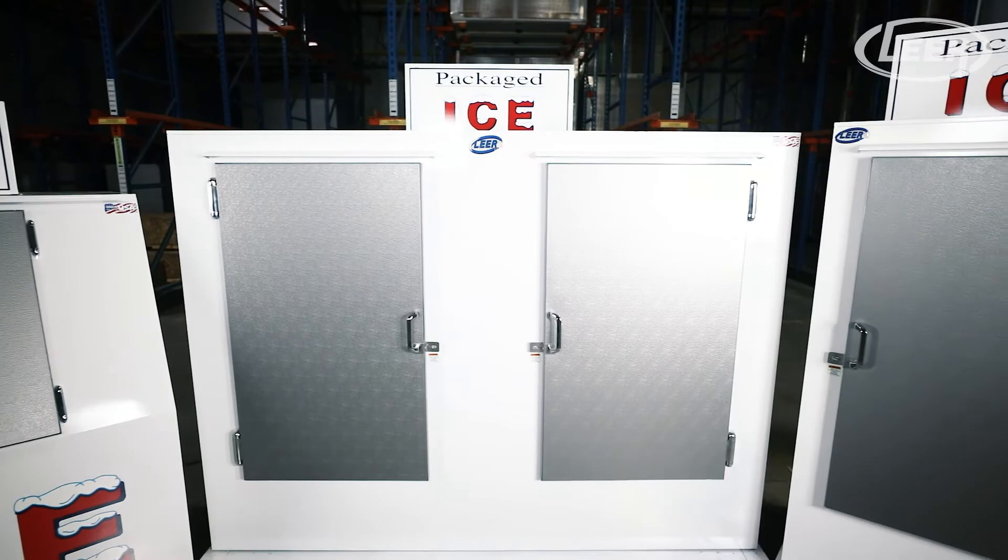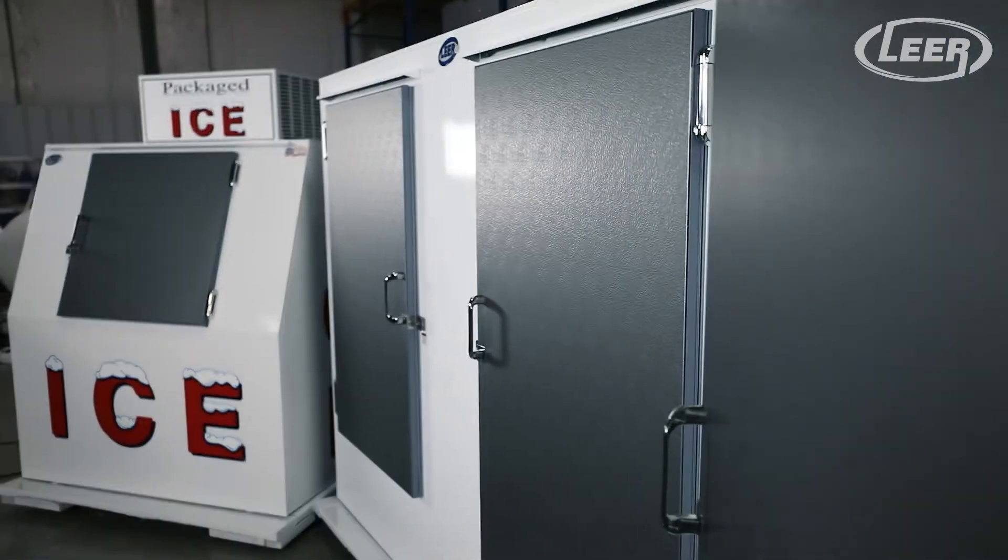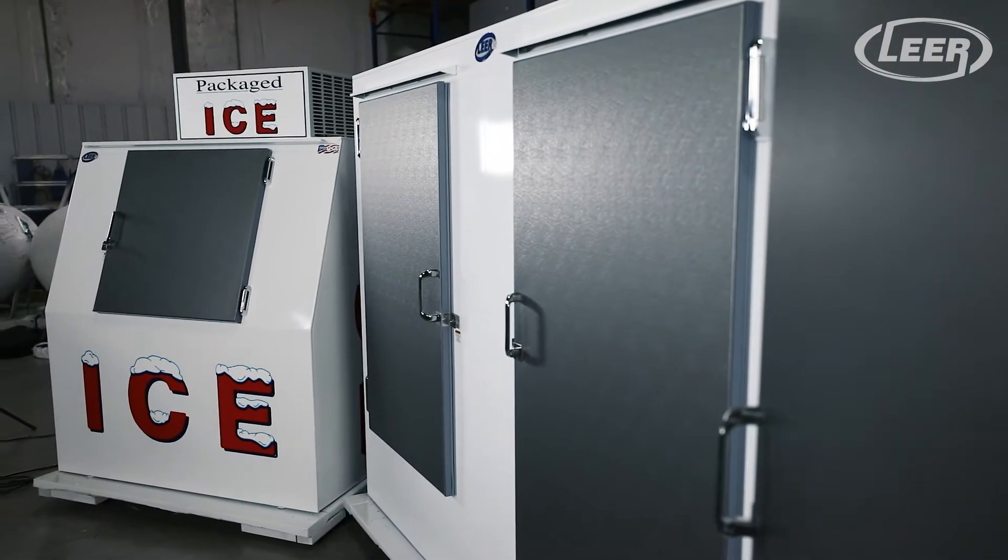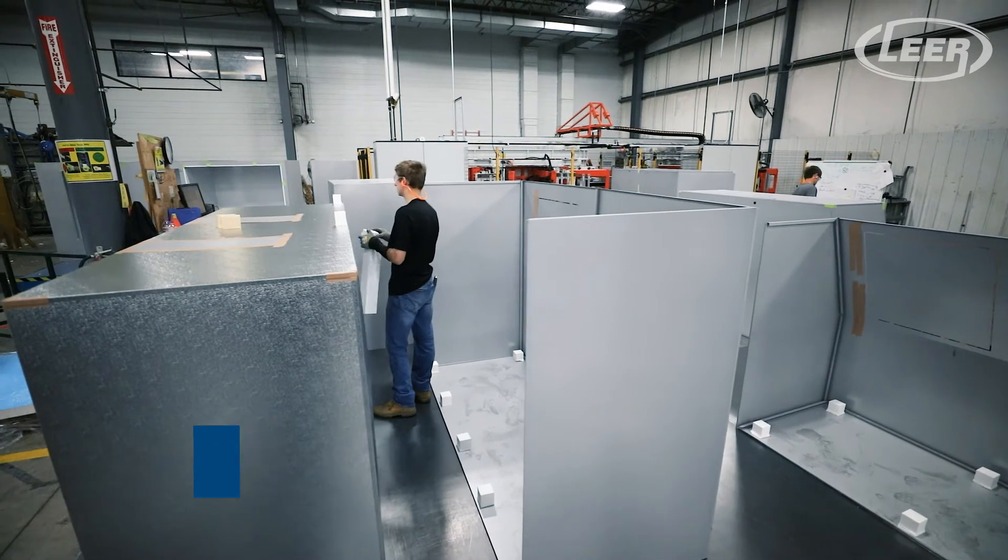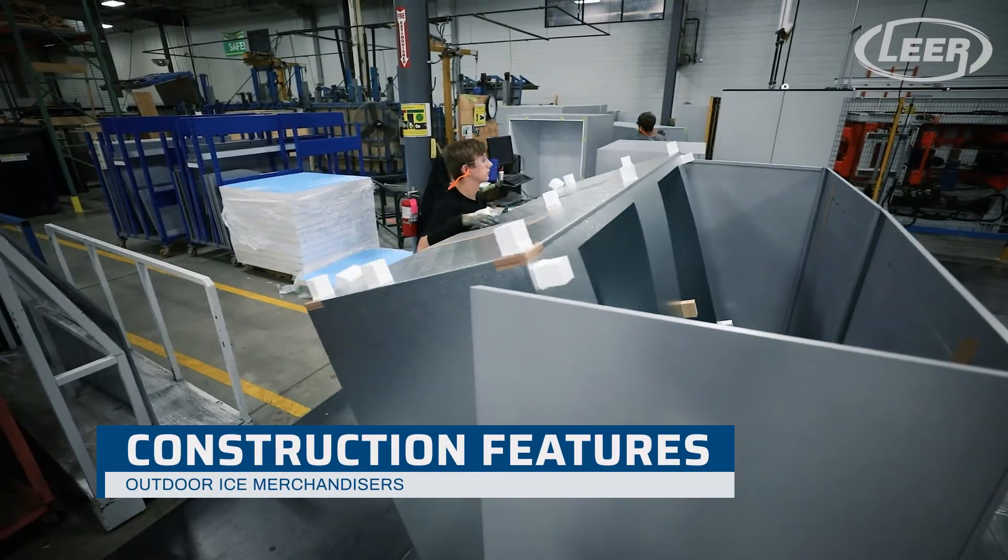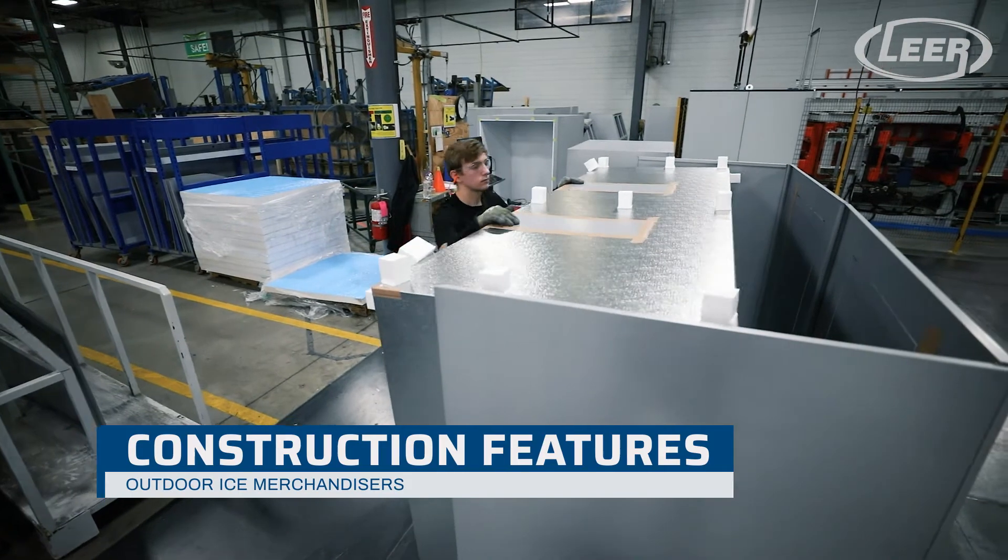Let's get started with the merchandiser construction and then we'll work our way from the outside in. The merchandiser is essentially a box within a box. There's a steel inner liner and a steel outer shell.